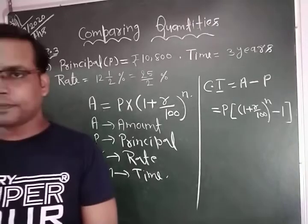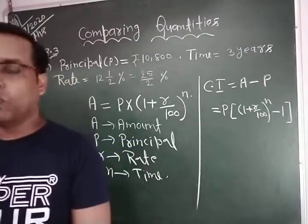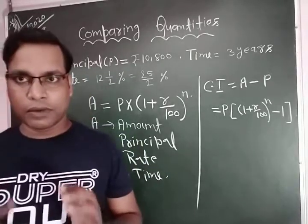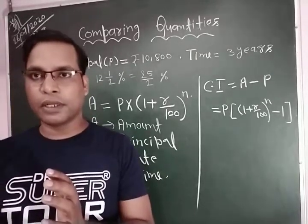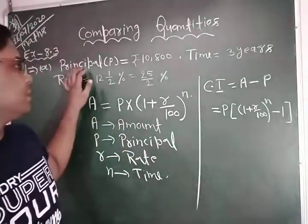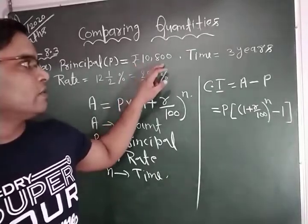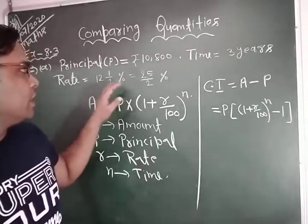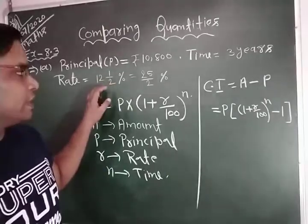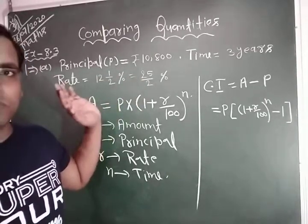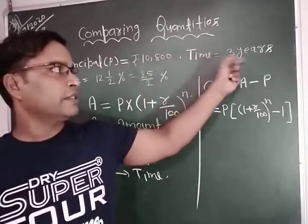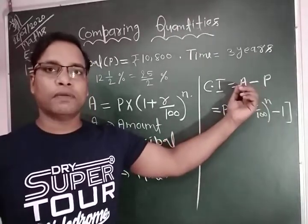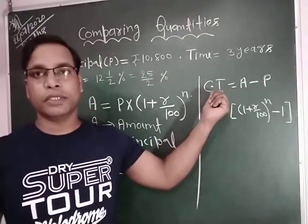The first question of this exercise is to calculate the amount and compound interest. The principal given here is 10,800 rupees. Time is 3 years. And the rate is given as 12 and a half, which means 12½ — if you convert it, we obtain 25 by 2 percentage. So first we find the amount, and after this we subtract principal from amount to obtain compound interest.